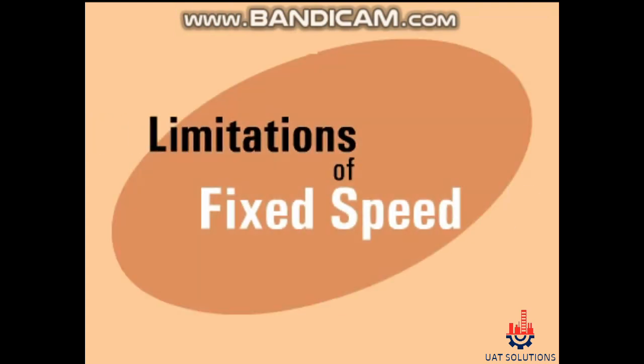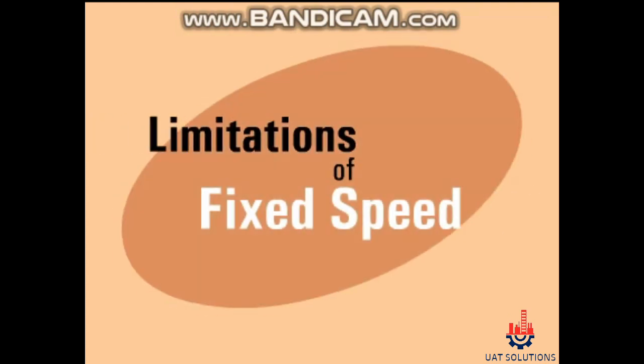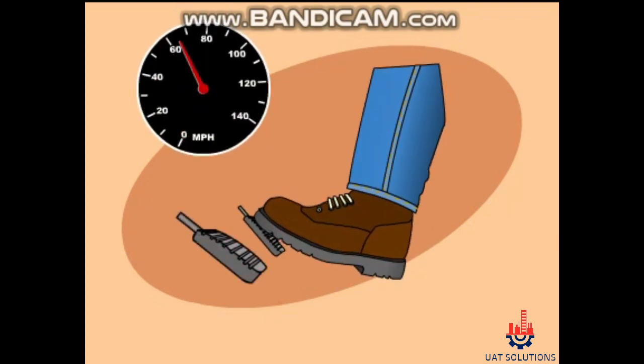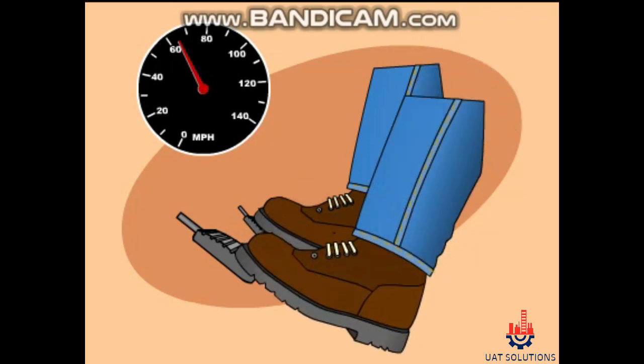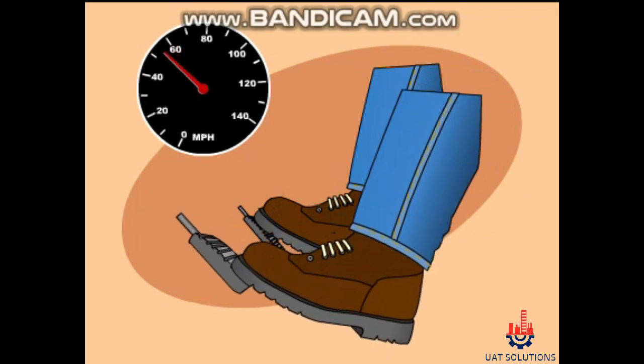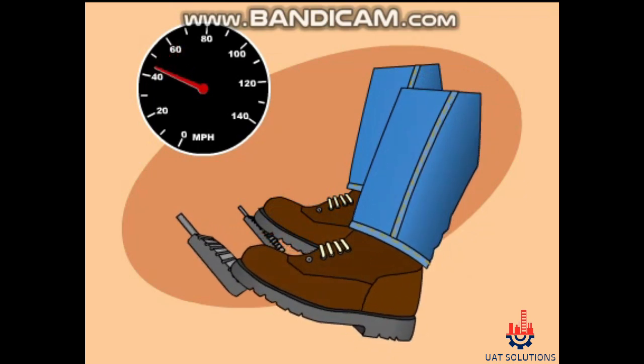To understand the limitations of fixed speed pre-rotation vane capacity control, imagine driving a car down the highway with your foot on the gas, maintaining a steady speed of 65 miles per hour. There are two ways for you to adjust the speed of the car. The least efficient method would be to use your brake. With one foot on the gas and one on the brake, you could control the speed of the car. The car's engine would still consume the same amount of gas, no matter what the speed, since the flow of gas to the engine is controlled by the deflection of the gas pedal.